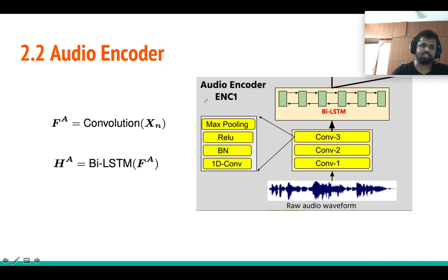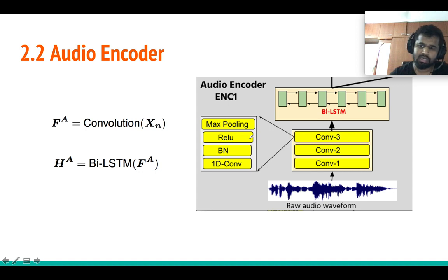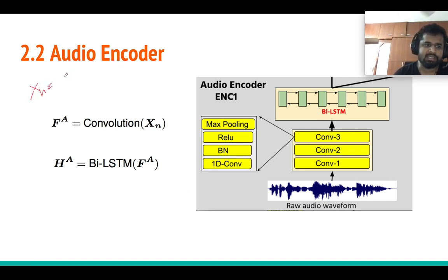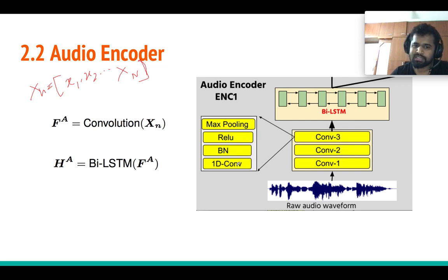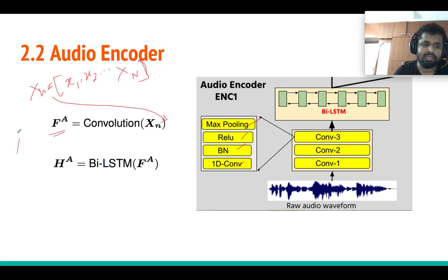Looking at the audio encoder in detail: it is a neural network with CNNs and RNNs to learn feature representations directly from raw audio. The raw audio is a 1D signal represented as a sequence of samples x1, x2, ..., x_N. The convolution block consists of three convolution layers, each with 1D convolution, batch normalization, ReLU, and max pooling. Passing x_N as input, we get an output F_a, which is a 2D matrix.